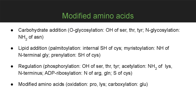O-glycosylation means that the O-H group in serine, threonine, or tyrosine can interact with carbohydrates like glucose or fructose. Lipid addition — palmitoylation — means the protein structure contains a part of palmitic acid. Regulation can occur via phosphorylation: adding a phosphate group gives additional negative charge, changing protein structure and function, so proteins can be activated or inhibited. Amino acids can also be modified by oxidation of proline or lysine, or carboxylation of glutamine.